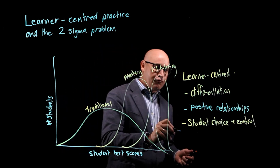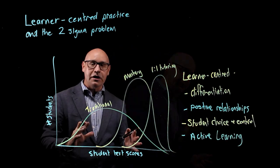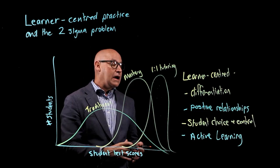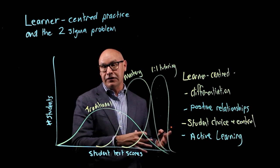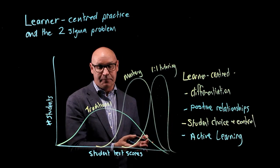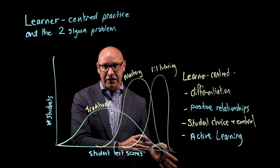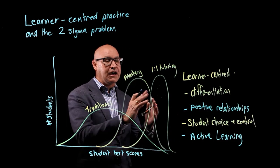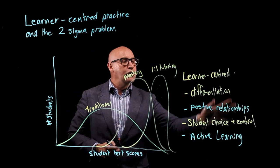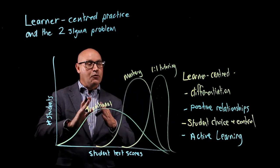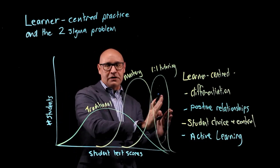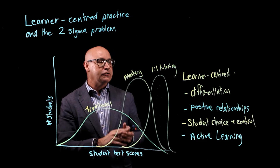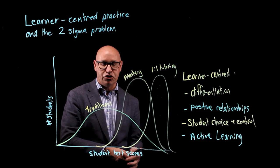The last one, and really importantly, is about active learning. Flipped learning provides the teacher with time to be spent practicing and deepening knowledge through active collaborative tasks. It's these four key characteristics of learner-centered practice that flipped learning is so well placed to support, and through implementing these we should be able to move student performance to approach the sorts of improvements that students can get from one-on-one tutoring.